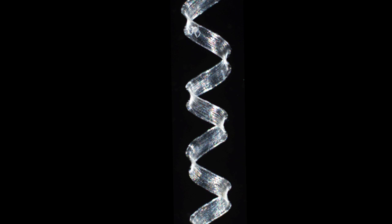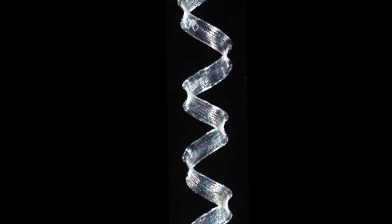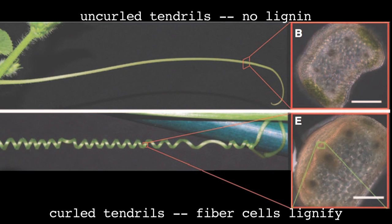In real life, it looks like this. The other thing that happens is that the tendril stiffens up. This fiber ribbon becomes lignified. So lignin locks the cells in a certain configuration.